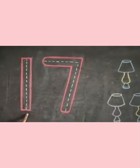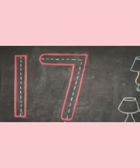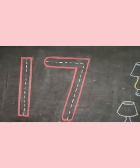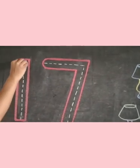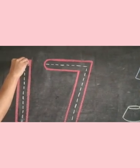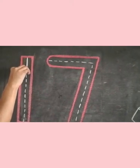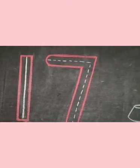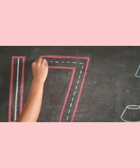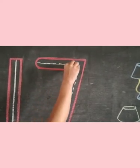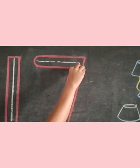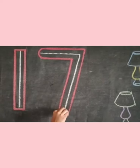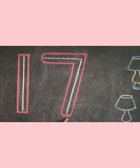Now let's see how to write number 17. We will trace this dotted line. So we will start from here. First, standing line. One. Now here, sleeping line and slanting line. Seven. One, seven, seventeen.